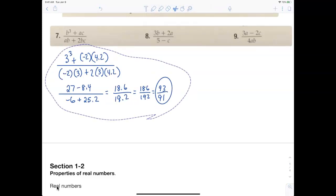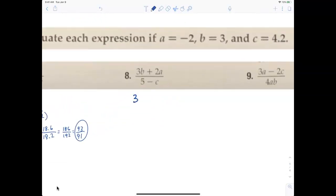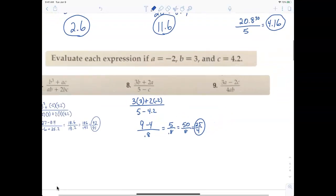For number 8 we have 3 times 3 plus 2 times negative 2 over 5 minus 4.2. Now we have 9 minus 4 over 0.8. 5 over 0.8, we could make that 50 over 8, then reduce that by 2 and make 25 over 4. So there's my answer, 25 over 4.